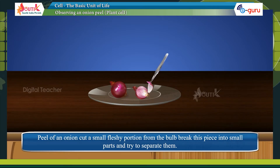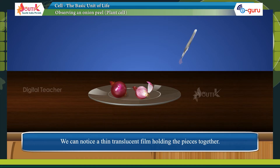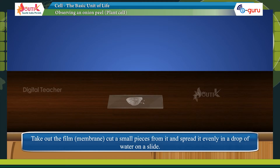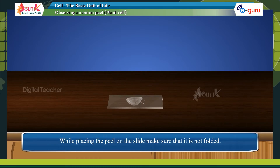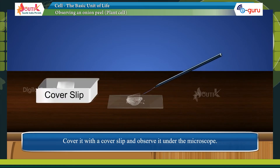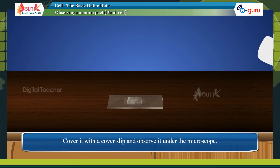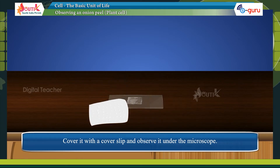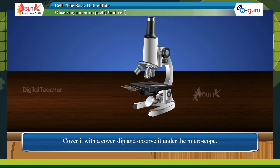Observing an onion peel: cut a small fresh portion from the bulb. Break this piece into small parts and try to separate them. You can notice a thin translucent film holding the pieces together. Take out the film, cut a small piece from it, and spread it evenly in a drop of water on a slide. Make sure the peel is not folded, cover it with a coverslip, and observe it under the microscope.